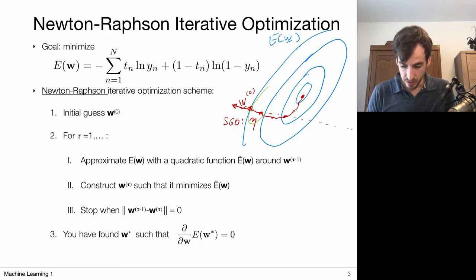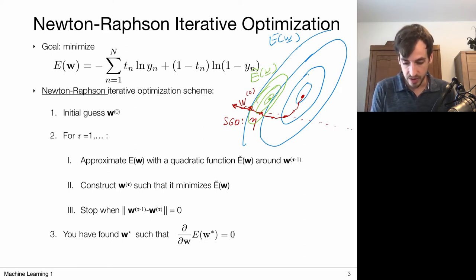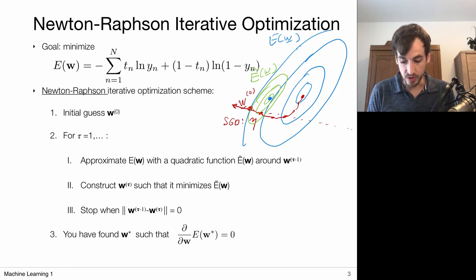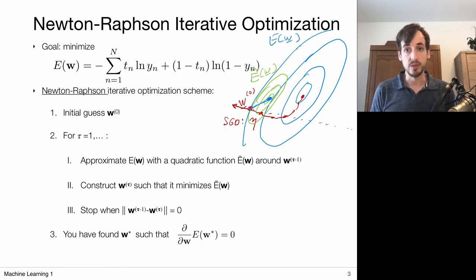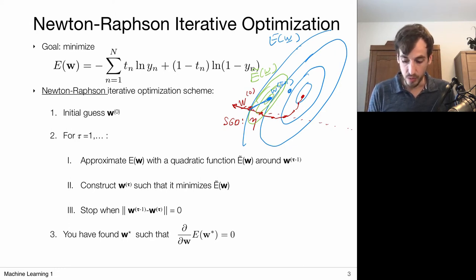We make a quadratic approximation of the error function around this point — e-tilde as a function of w. Then the next model parameters are given by the minimizer of this approximation. Since it's a quadratic approximation, it has one global minimum, and that point becomes our next model parameters at time step tau plus one. We then repeat this: make another quadratic approximation, and immediately jump to its minimum.